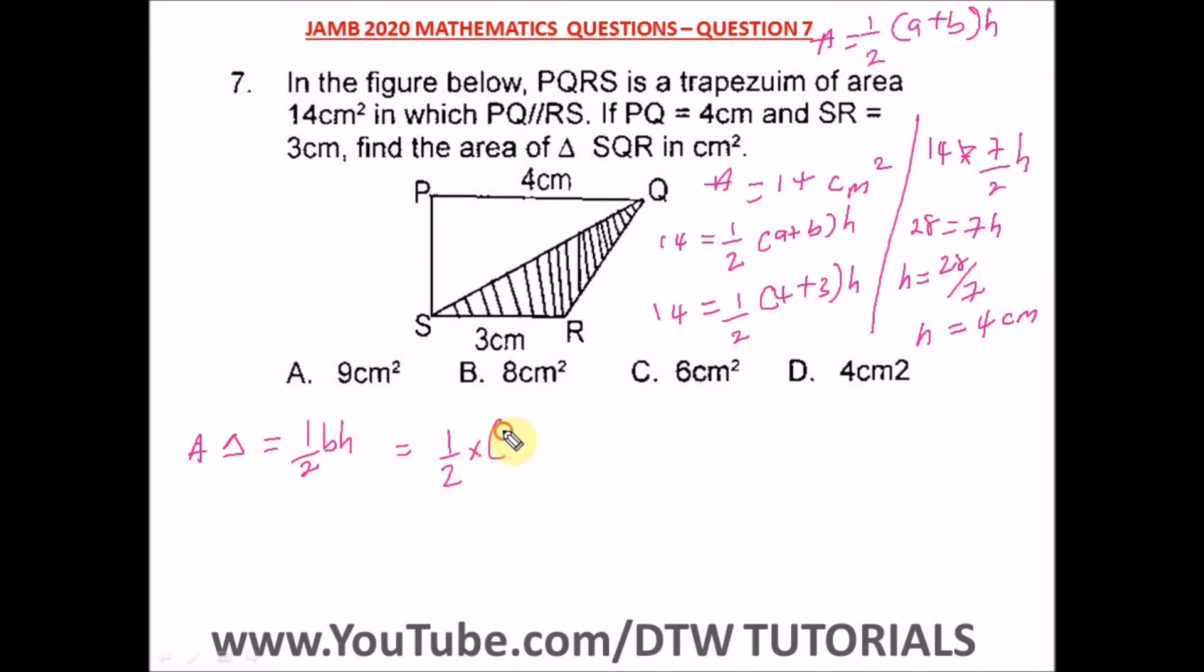So it equals 12/2. Our answer is 6 cm². This is the area of the triangle, which is option C.